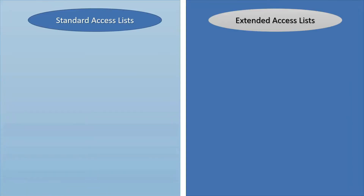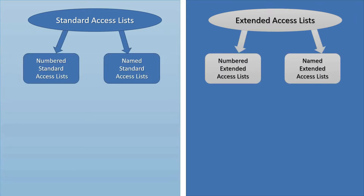There are mainly two types of access control lists: Standard and Extended. You can further classify these types into two subtypes: numbered and named.